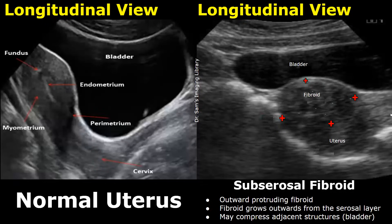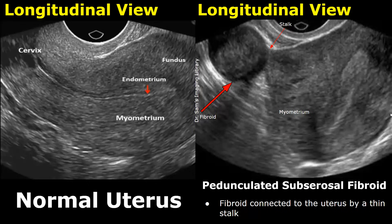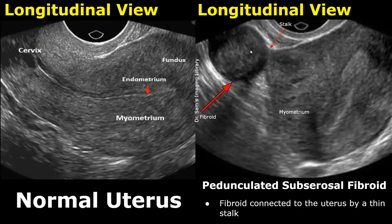Some types of subserosal fibroids are pedunculated, which means the fibroid is connected to the uterus by a thin stalk. There is a thin connection between the uterus and the fibroid, so if we see this type of appearance we will call it a pedunculated subserosal fibroid.